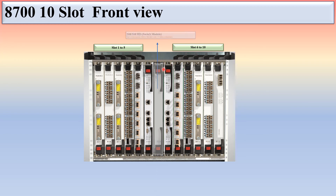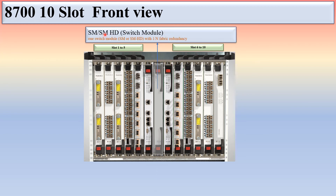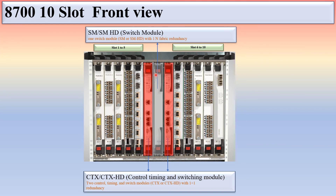There are two CTX cards, and in between the CTX cards is a switch module — SM or SMHT. You can insert either an SM card or an SMHT card. There is one switch module with 1-to-N fabric redundancy. The two CTX cards — you can insert either CTX or CTSHD — are the control timing and switching modules, and these two cards are in 1+1 redundancy.